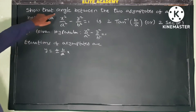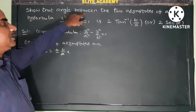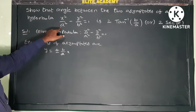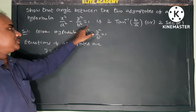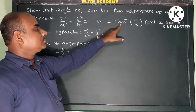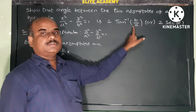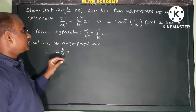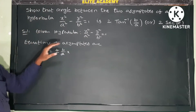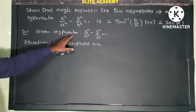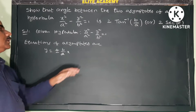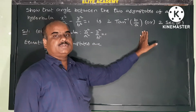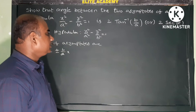Next problem: Show that the angle between the asymptotes of a hyperbola x²/a² - y²/b² = 1 is 2tan⁻¹(b/a) or 2sec⁻¹(e). We need to prove that the angle between the asymptotes equals 2tan⁻¹(b/a) or 2sec⁻¹(e).